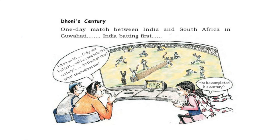Let's see what this image says. One day match between India and South Africa in Guwahati and India is batting first. Let's see what the commentators are saying. Dhoni is on 96, only one ball left. Will he complete his century? What a marvelous six! So from this commentator we get the data that Dhoni scored 96 runs, and in the end he scored a marvelous six, that is six runs more. So 96 plus 6 is equal to 102 runs.